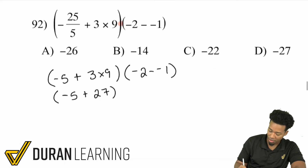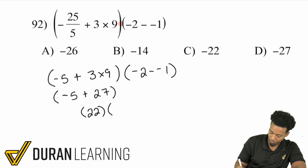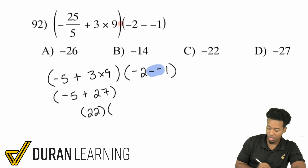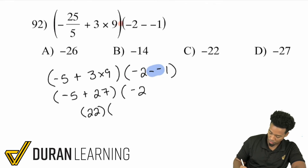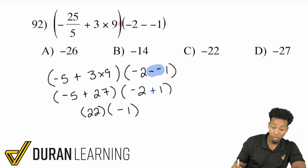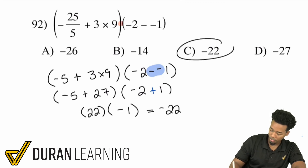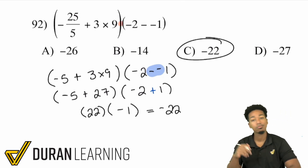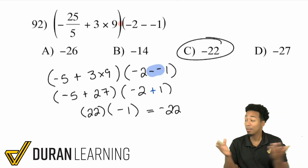So negative 5 plus 27 is 22. On the right side, there's a double negative, which becomes negative 2 plus 1, giving negative 1. So 22 times negative 1 is negative 22, and that's the answer.